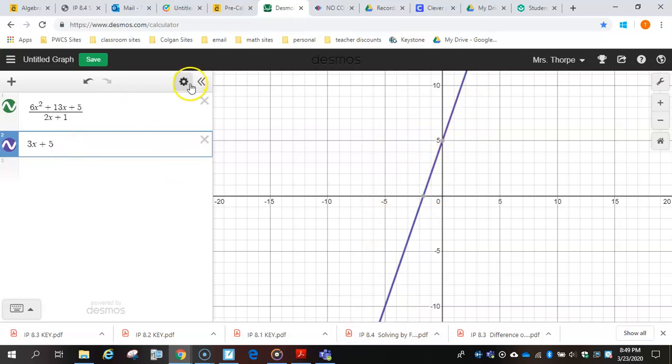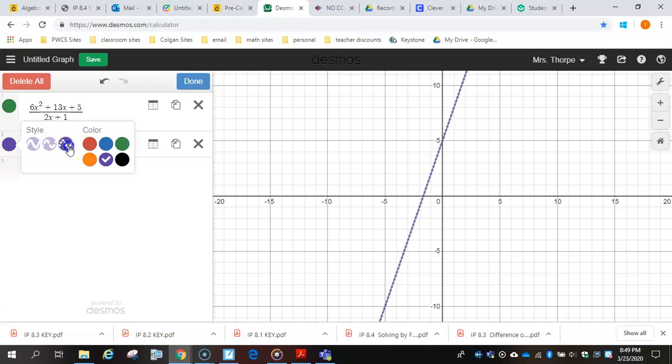This line overlapped. So if I go back into my gear, and I change this to the dotted line, I see that these two lines overlap. So that is the correct answer for this division problem.